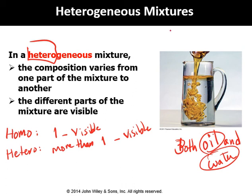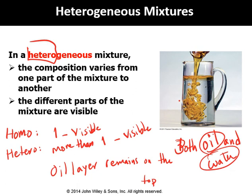When we add oil to water, the oil layer remains on top of the mixture. Do you remember what term we use for this observation? The oil layer floats on the water. If you forgot that, you may watch the video where we talk about density observations. Thank you for watching this video and I hope it helps you get a better understanding of the classification of matter.